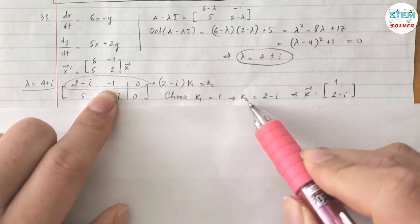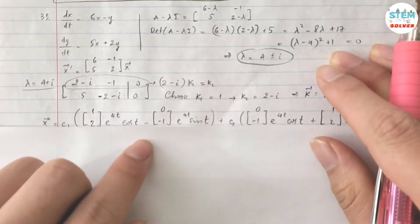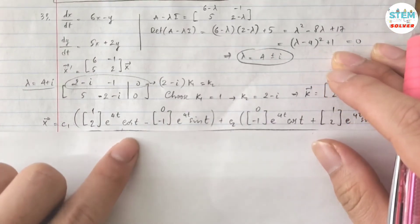then k2 is 2 - i. Then my vector k is [1, 2 - i], okay? Okay, now it's time to write our final answer.